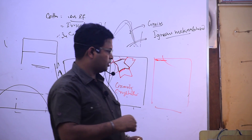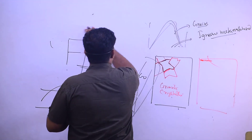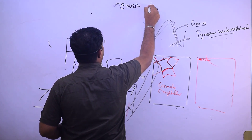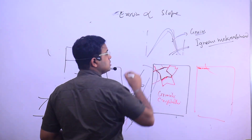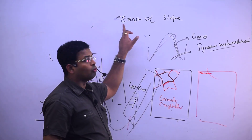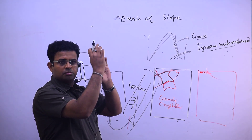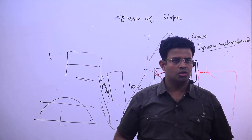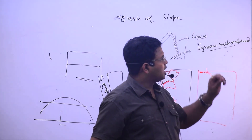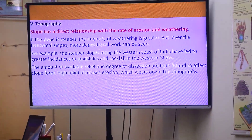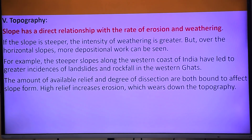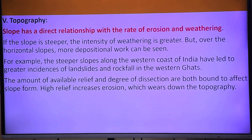Steeper the slope - slope is in a direct relationship means erosion is directly proportional to slope. More slope, more erosion. So there is a direct relationship between the rate of erosion and weathering. If the slope is steeper, the intensity of weathering is greater, but over horizontal slopes more depositional work can be seen. On a horizontal slope, weathering and erosion happen, but comparatively more deposition occurs.